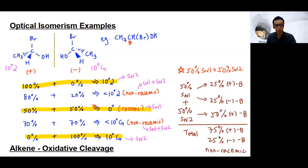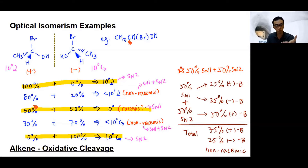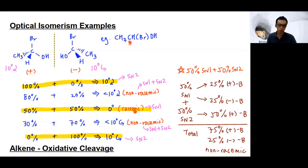There is also the special mixture of 50% plus isomer and 50% minus isomer, where they cancel out each other's optical activity. Half the plus isomer rotates clockwise and half the minus isomer rotates counter-clockwise, so they cancel out. Overall, the optical activity is zero — this is the racemic mixture.